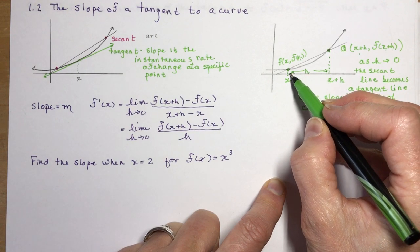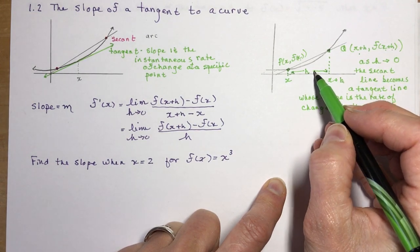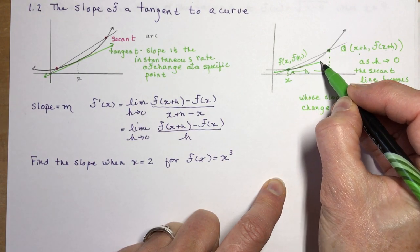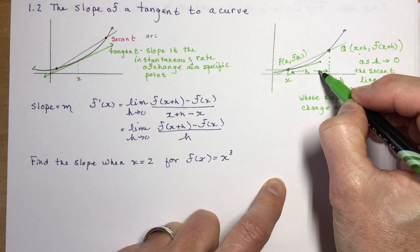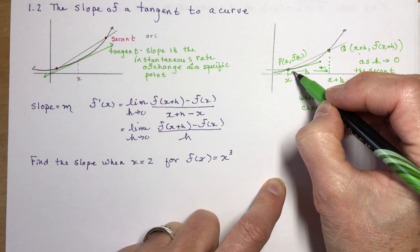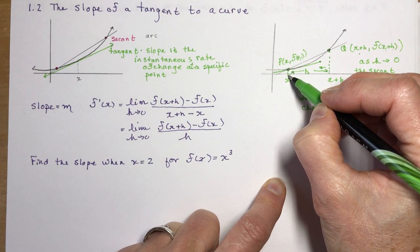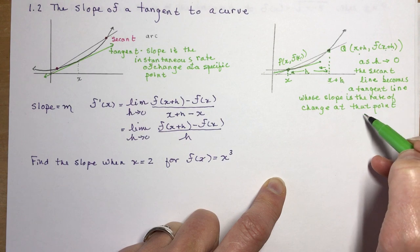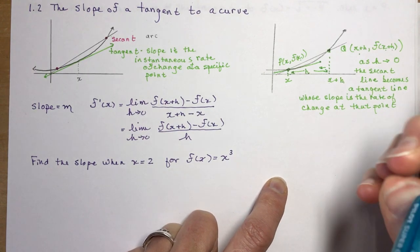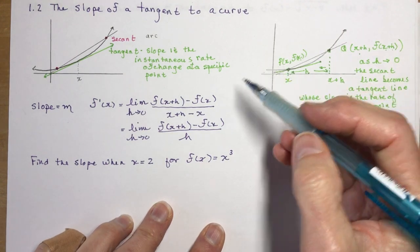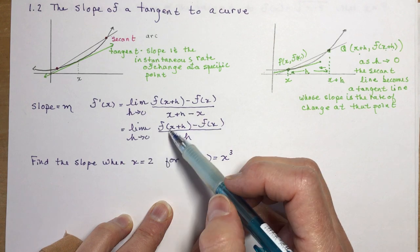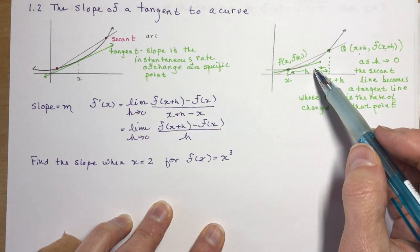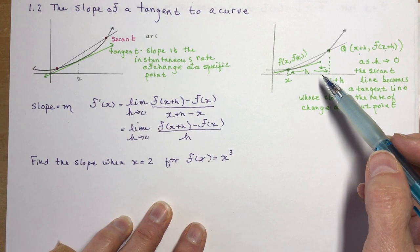In calculus we make h so small that we know exactly what the slope of the tangent line is. We move Q toward P, making h smaller and smaller until h equals zero. As h approaches zero, the secant line becomes a tangent line whose slope is the rate of change at that point.